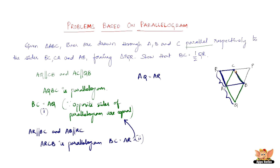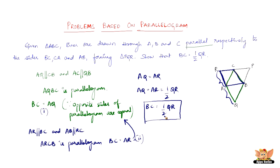Since AQ equals BC and AR equals BC, we have AQ equal to AR, and therefore they are each equal to half of QR. Thus we have proved that BC equals half of QR.